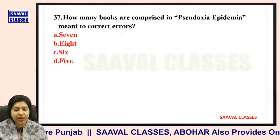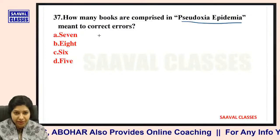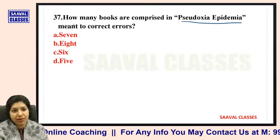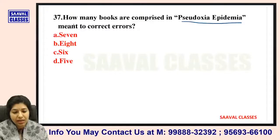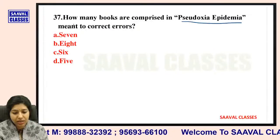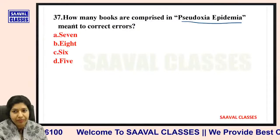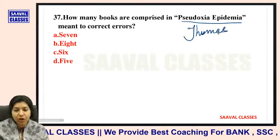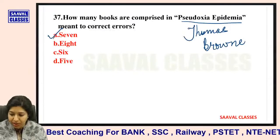Question number thirty-seven: How many books are comprised in Pseudodoxia Epidemica, meant to correct errors? It is by Thomas Brown. There are a total of seven books in Pseudodoxia Epidemica.